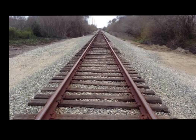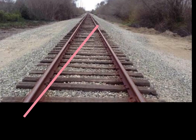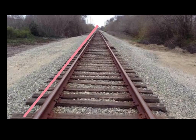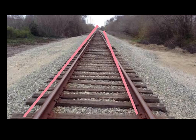Train tracks, for example, are parallel lines. The two metal bars that go straight across — even though they look like they will meet on the horizon — will actually never meet. They are always going to be the same distance apart.